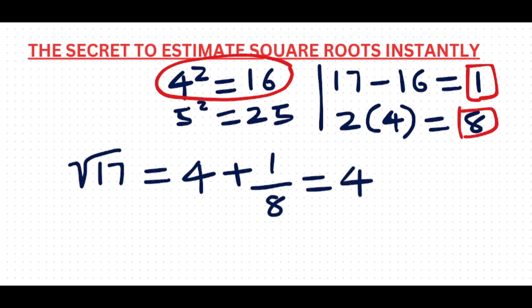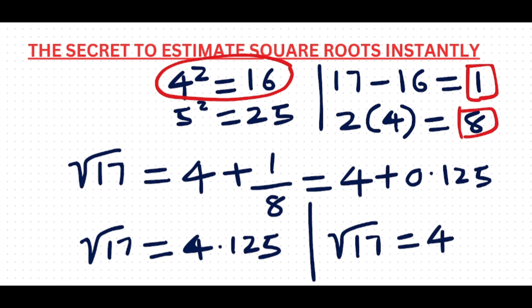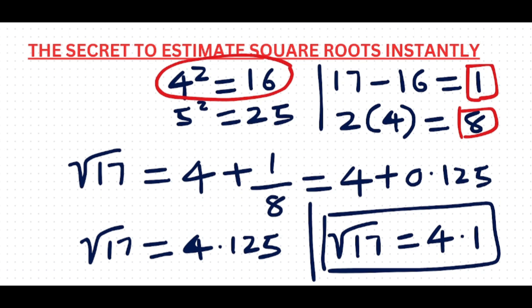Now let's calculate the value. 1 over 8 is 0.125, so the square root of 17 equals 4 plus 0.125, which is 4.125. When I round it to one decimal, the square root of 17 is approximately 4.1. This is the way to find the square root of a non-perfect square. Now let's do the next question — finding the square root of 41.